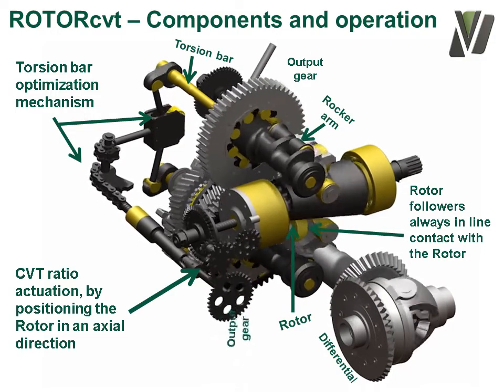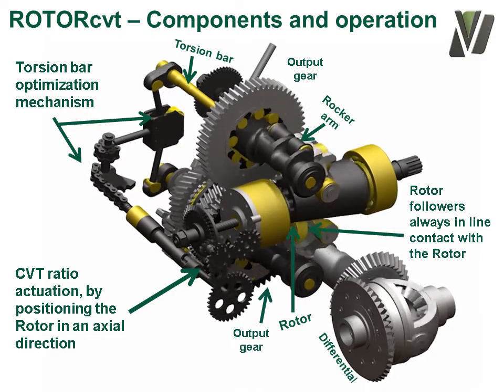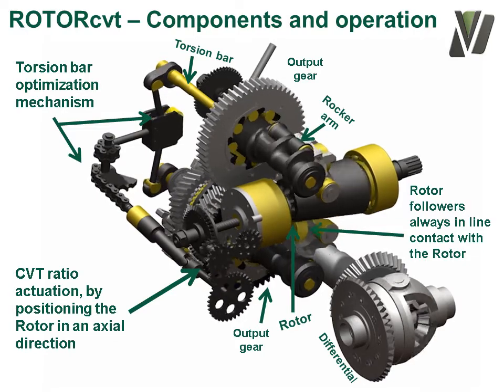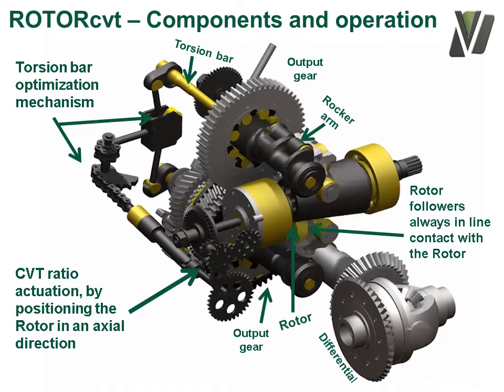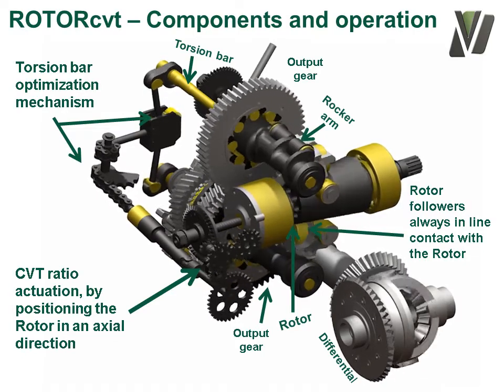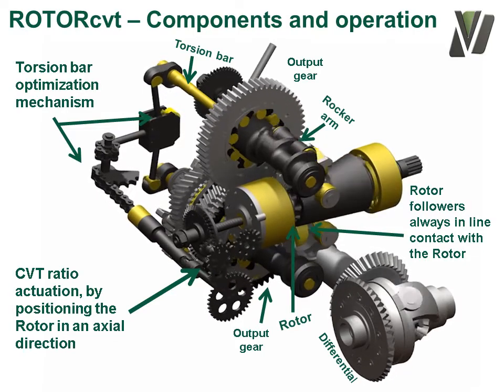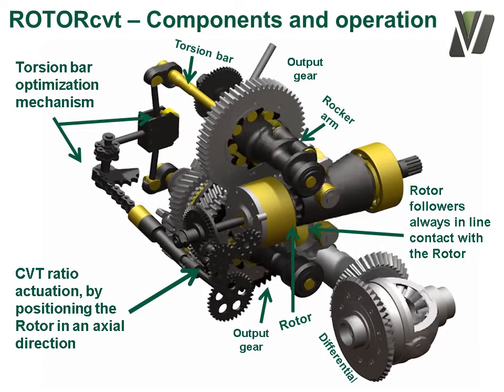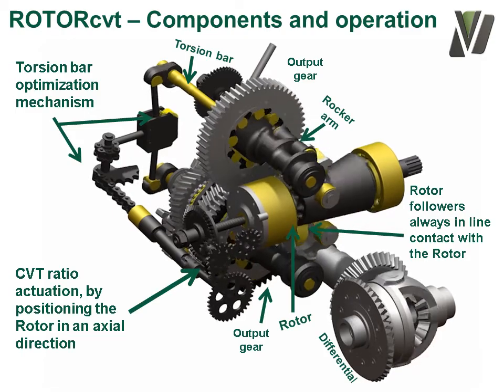The two output gears are meshed together, and the bottom output gear serves as an input to the two-speed gearbox.